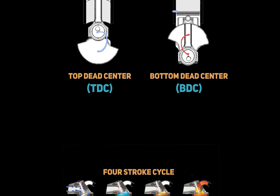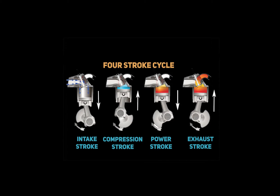From this idea, we can then start to understand a four-stroke cycle. The four-stroke cycle requires four piston strokes to complete one cycle, and for every four strokes, the engine produces one power stroke. This continues over and over again, completing cycle after cycle until the engine is killed or the cycle is stopped.